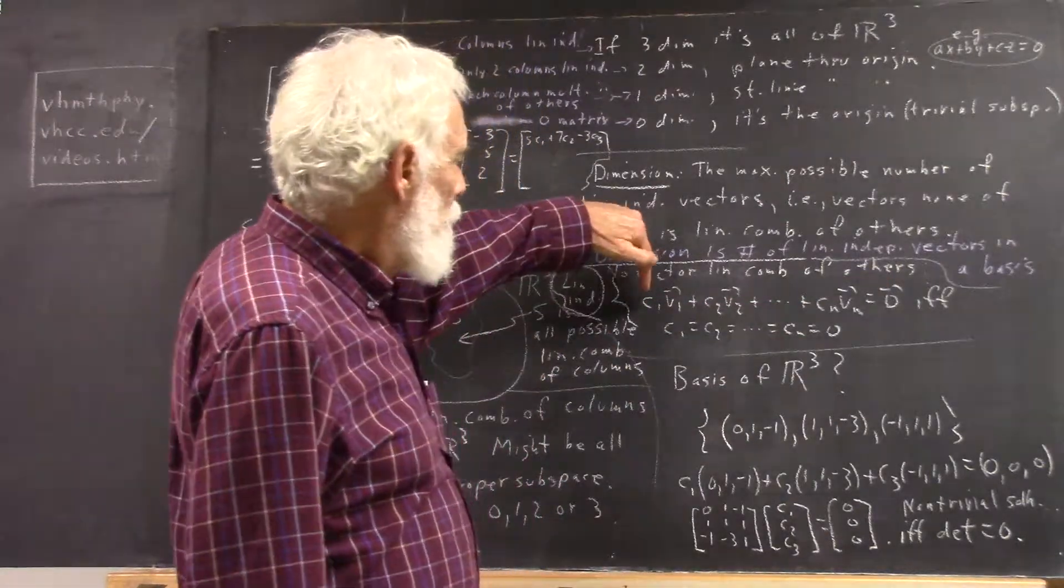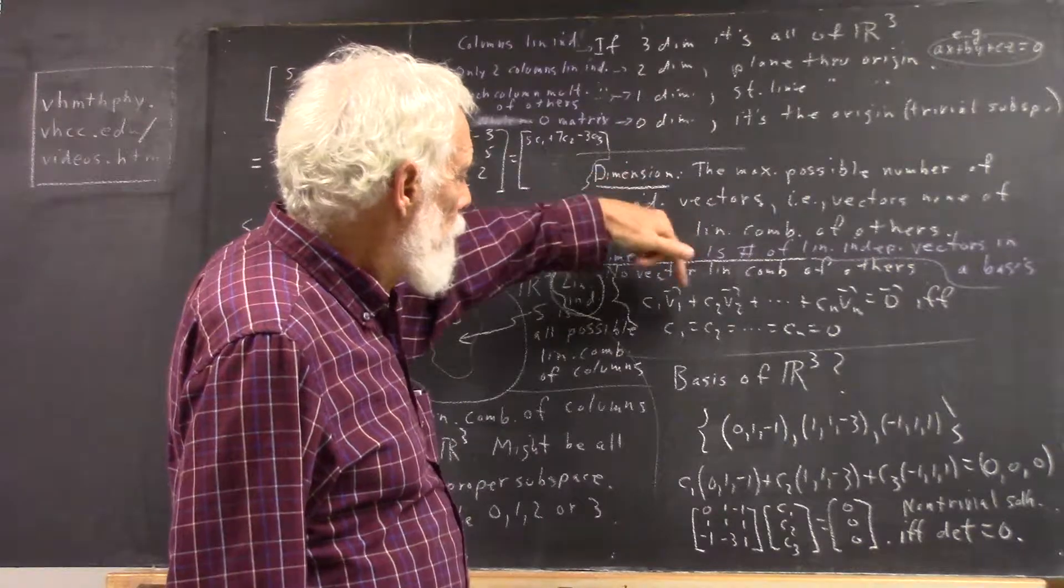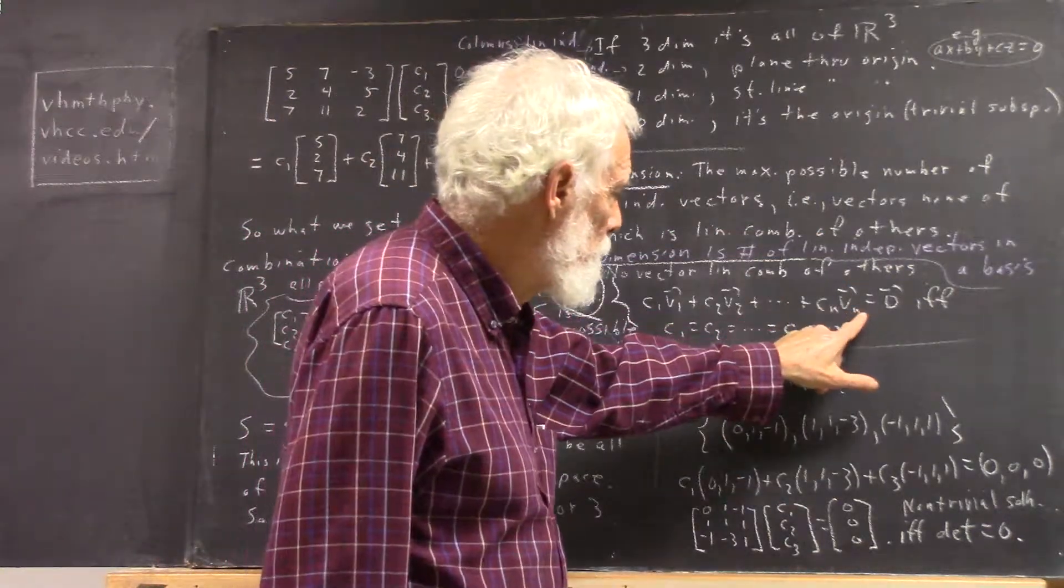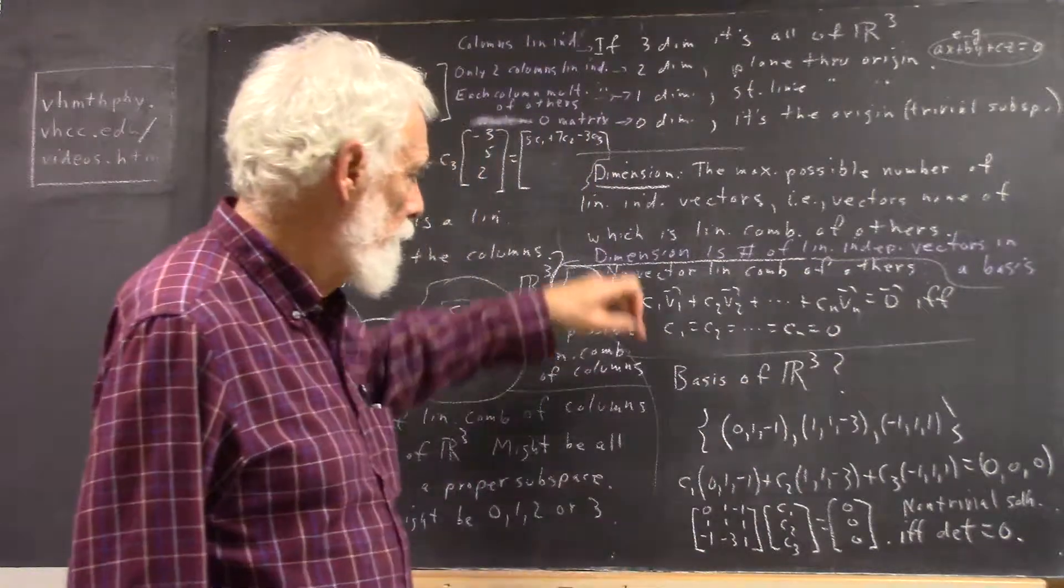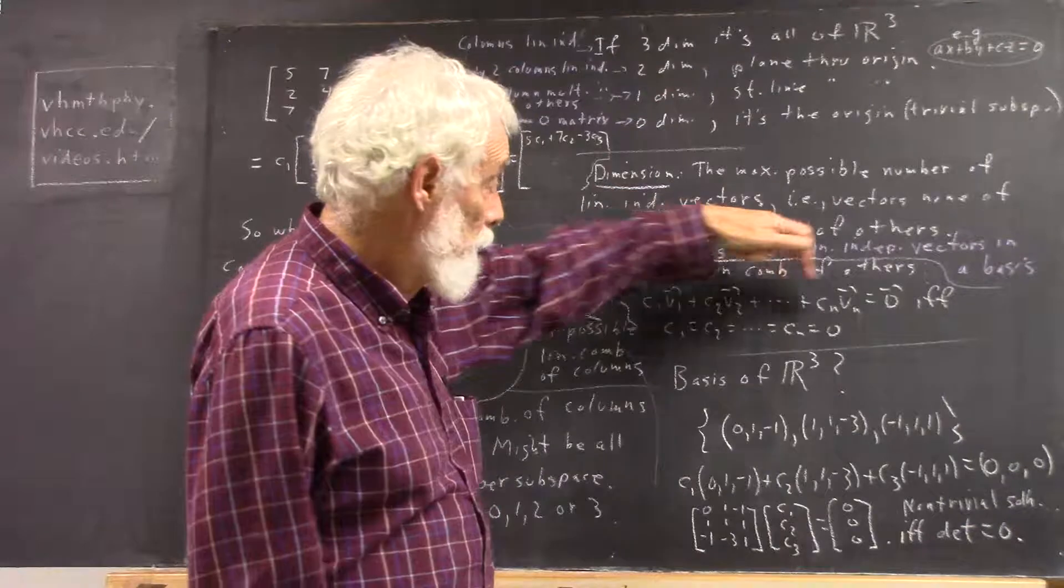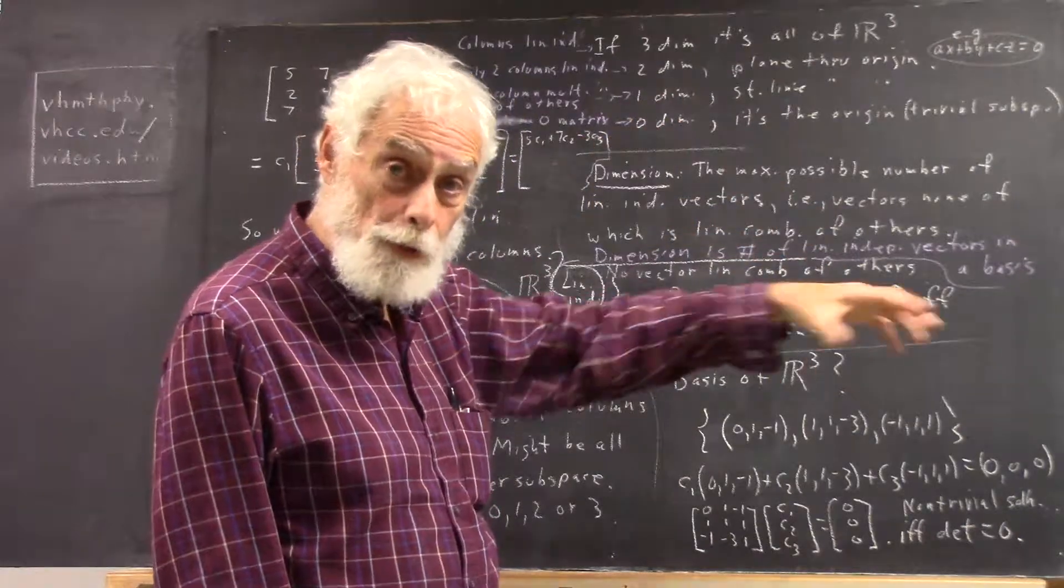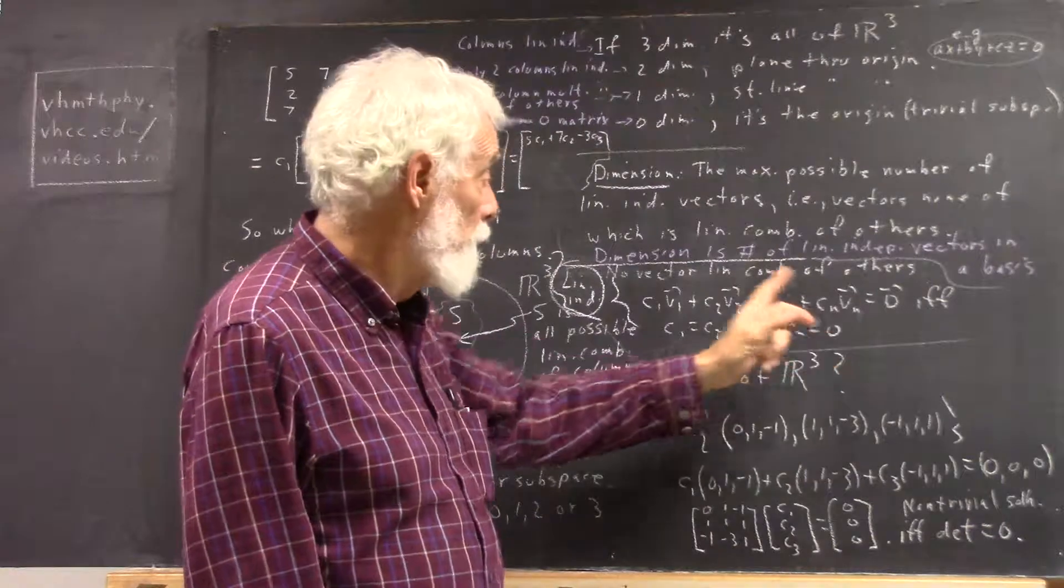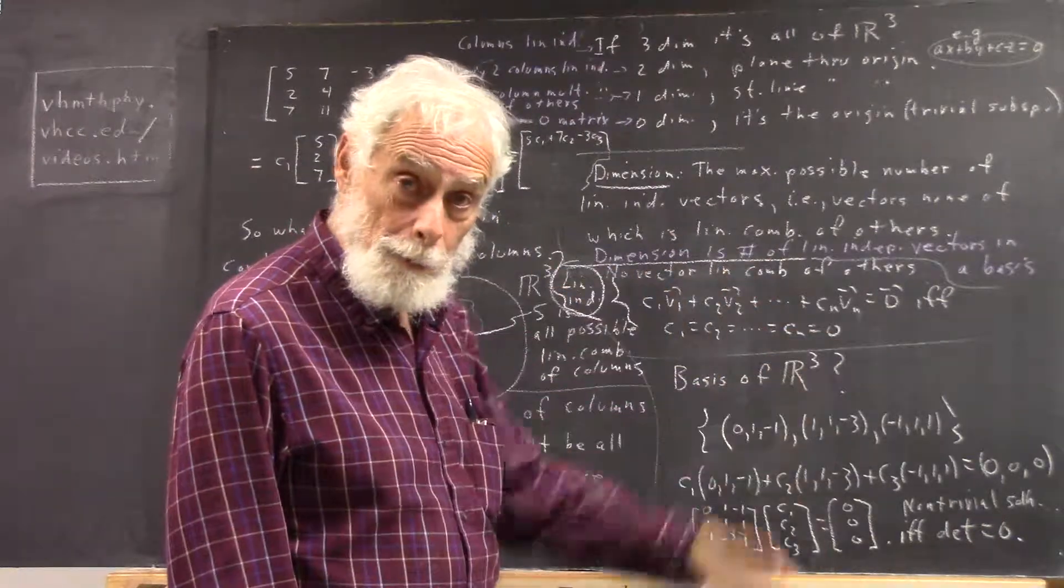It says if your vectors are V1, V2, up through VN, it's a bad-looking N but there's a bad place on the board I think. This is a linear combination, and we understand a linear combination is just a sum of multiples. So this is just a sum of multiples of the N vectors in your proposed linearly independent set.